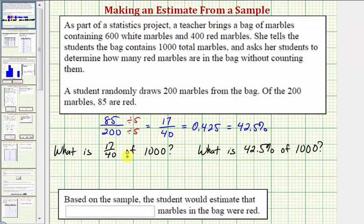In mathematics, 'of' means multiplication, so in order to find 17/40 of 1,000, we want to find the product of 17/40 and 1,000. In order to find the percent of a number, we convert the percent to a decimal and multiply.